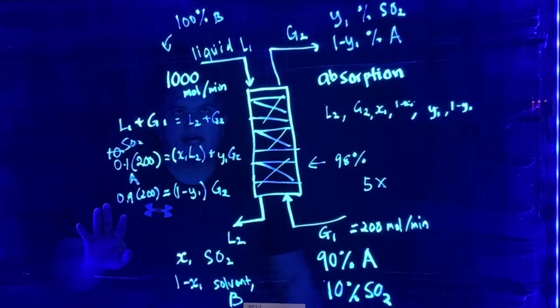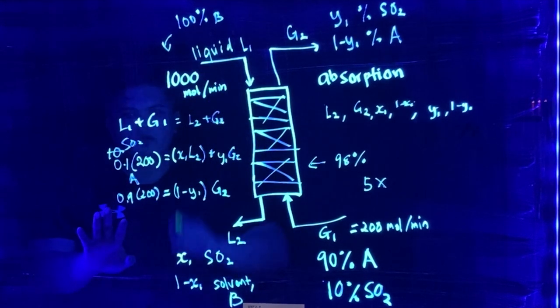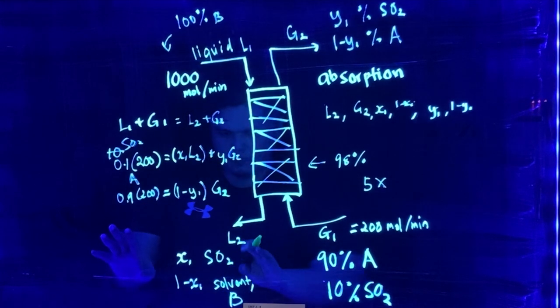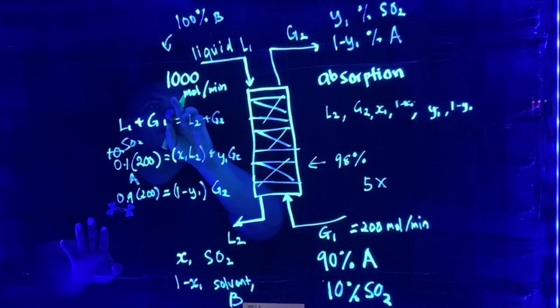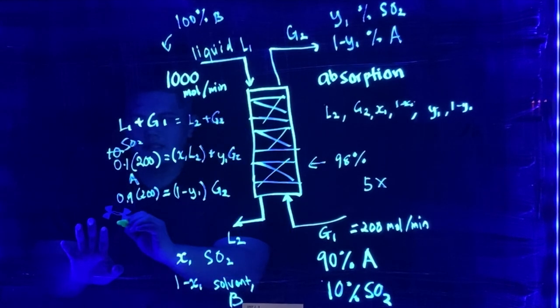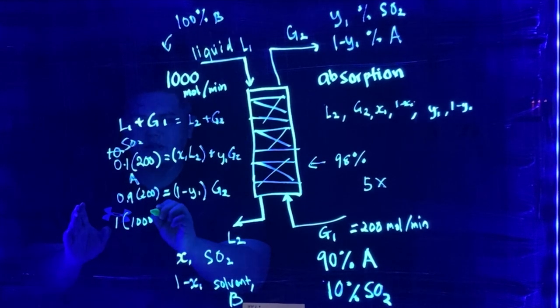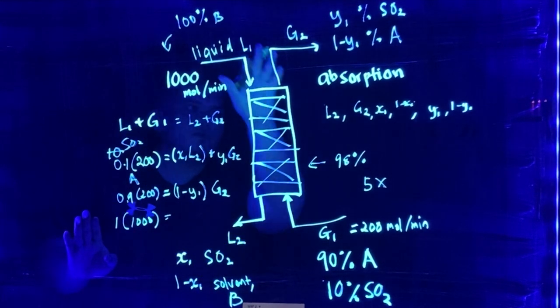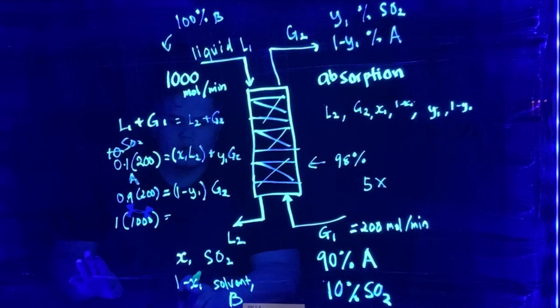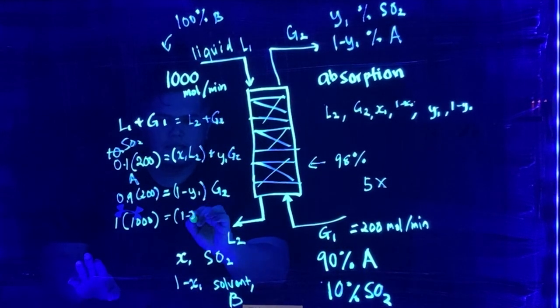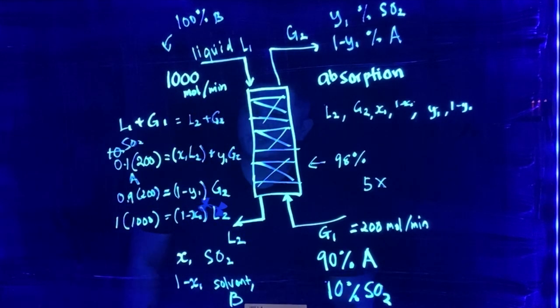What are the equation that we could have? So we could have also on the solvent. So the solvent is 1,000 mole per minute, which is 1 multiply with 1,000. And then the solvent also does not go into the gas stream. So it is equals to 1 minus X1 multiply with L2.